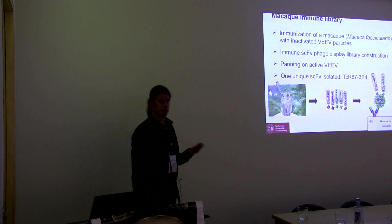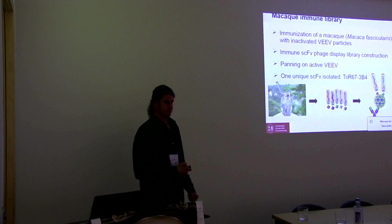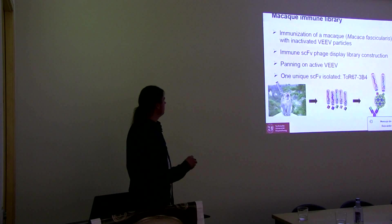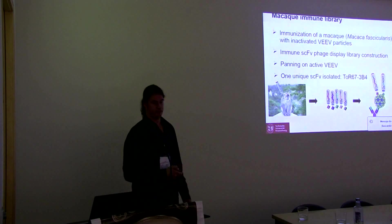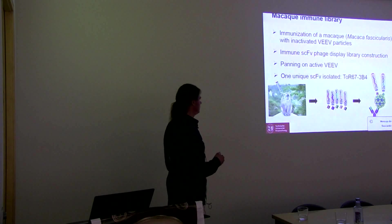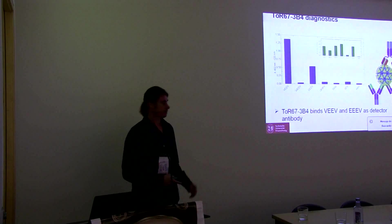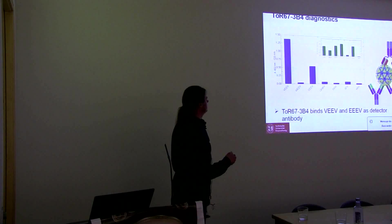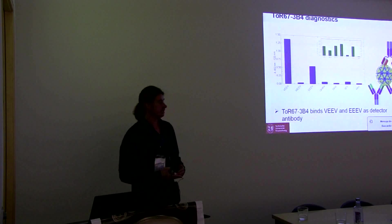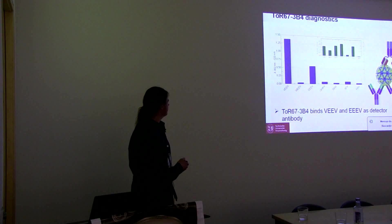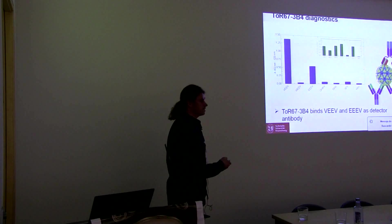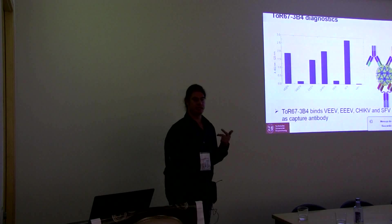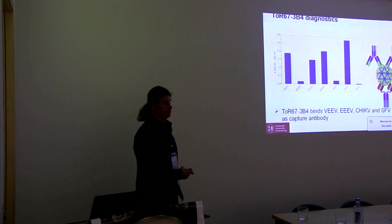This virus is a category B bioterrorism agent. Here we are not using human antibodies — we are starting with macaques. We immunized macaques with inactivated Venezuelan equine encephalitis virus particles, made an immune phage display library, performed panning on active virus, and isolated one unique antibody. This unique antibody can be used for diagnostics — in an ELISA as a detector antibody to identify Venezuelan equine encephalitis and Eastern equine encephalitis, and it also binds chikungunya and Semliki Forest virus.